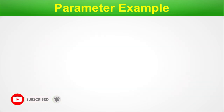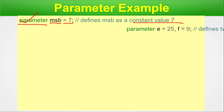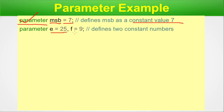Now let's start examples to better understand parameters. Using the parameter keyword, you declare a parameter and assign a constant value — for example, parameter d = 7. Similarly, parameter e = 25 and f = 9 defines two constant numbers; multiple parameters can be declared in one line using comma-separated format. We can also define parameter r = 5.7, which declares a real parameter. Parameter values can be of different types but must be constant and cannot change during simulation.